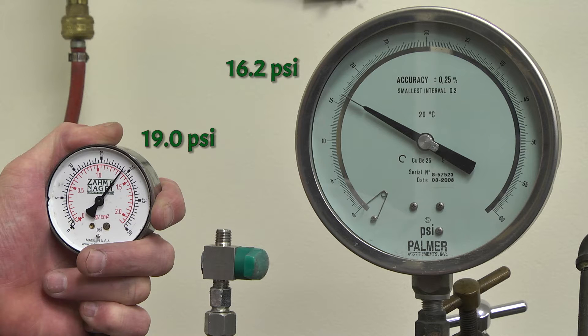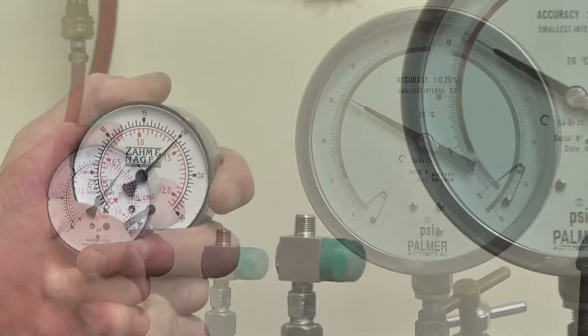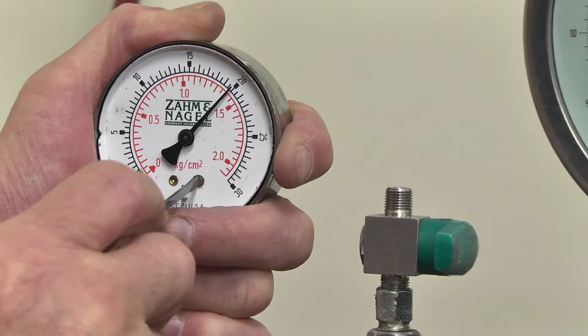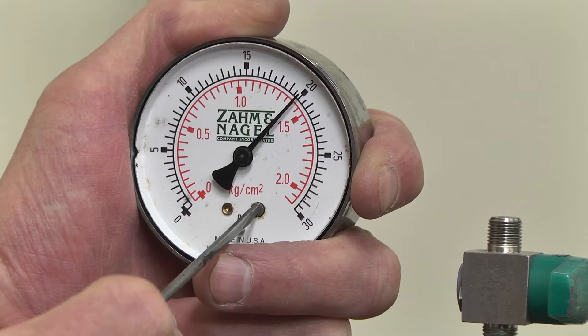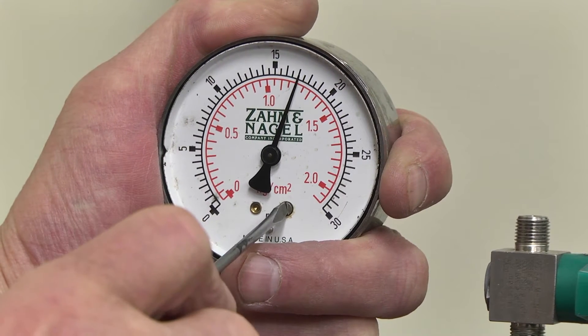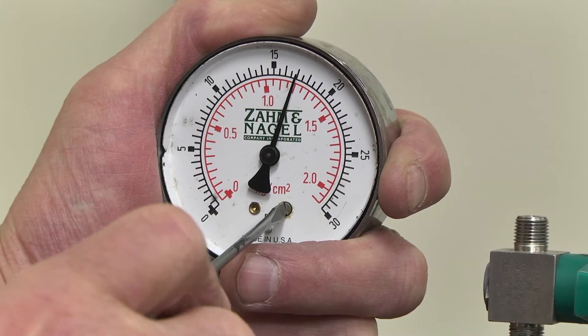If the reading varies more than one quarter of a PSI, you can adjust the subject gauge by inserting a slotted screwdriver in the brass screw located on the lower right hand side of the gauge face. Turn the screw clockwise to move the pointer up the scale and counterclockwise to move the pointer down the scale.